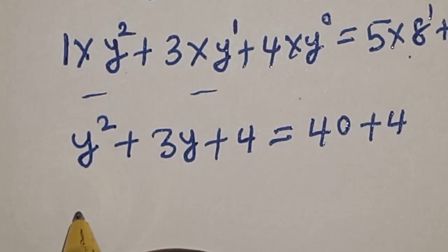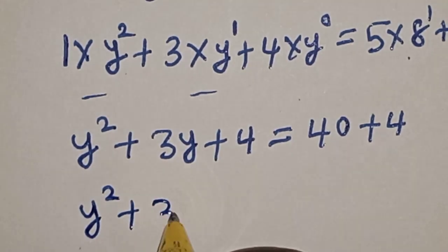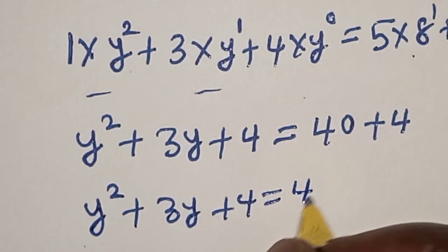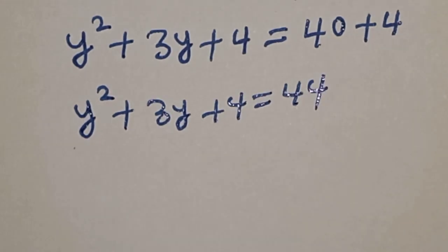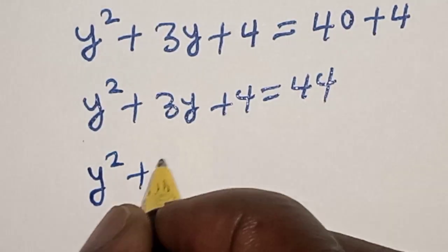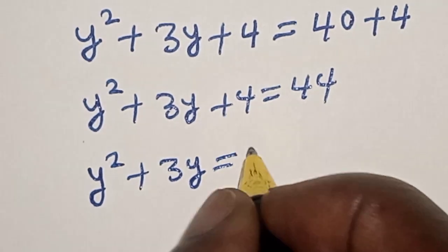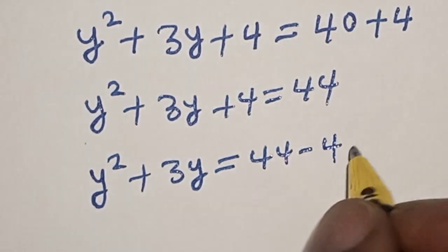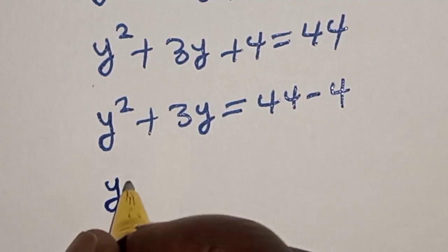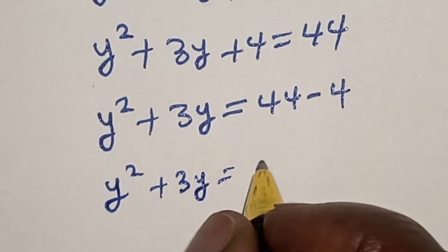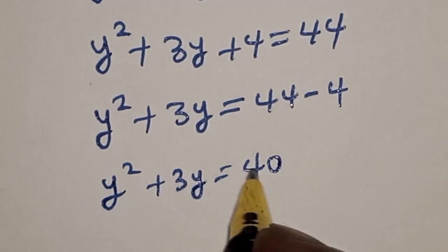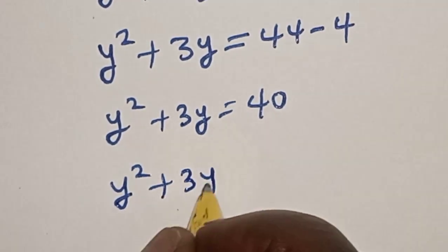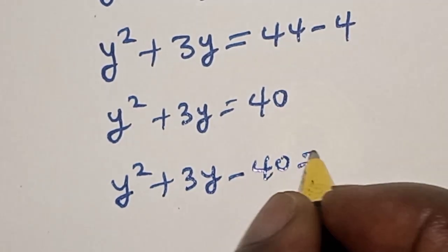Now we have y squared plus 3y plus 4 is equal to 40 plus 4, which is 44. So y squared plus 3y is equal to 44 minus 4, which is 40. Bringing 40 to the other side gives us y squared plus 3y minus 40 is equal to 0.